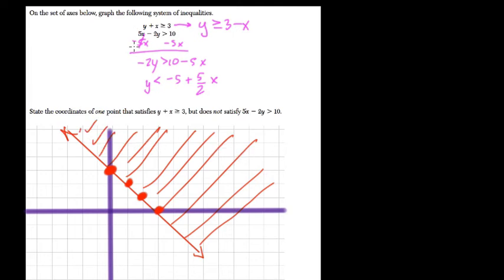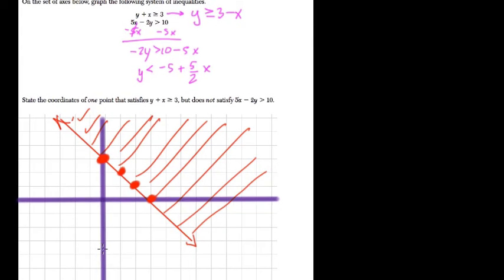Okay, the next thing is y is less than this other line. And the other line is just, it says negative 5 plus 5 halves. So negative 5 is the y intercept. 1, 2, 3, 4, 5, negative 5. Alright, 1, 2, 3. Okay, that's your y intercept.